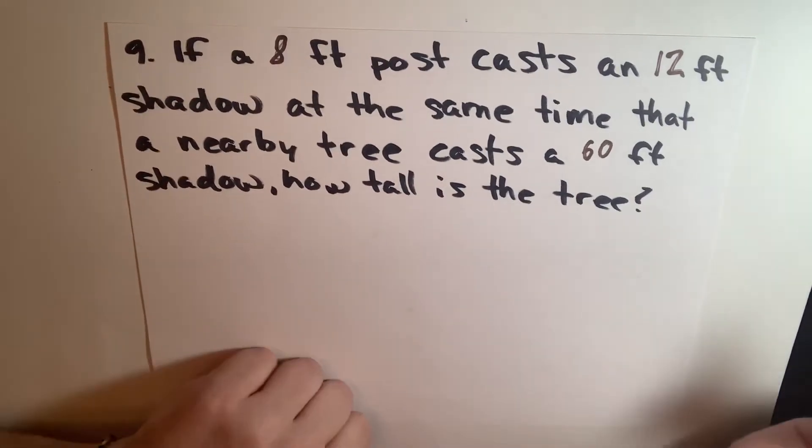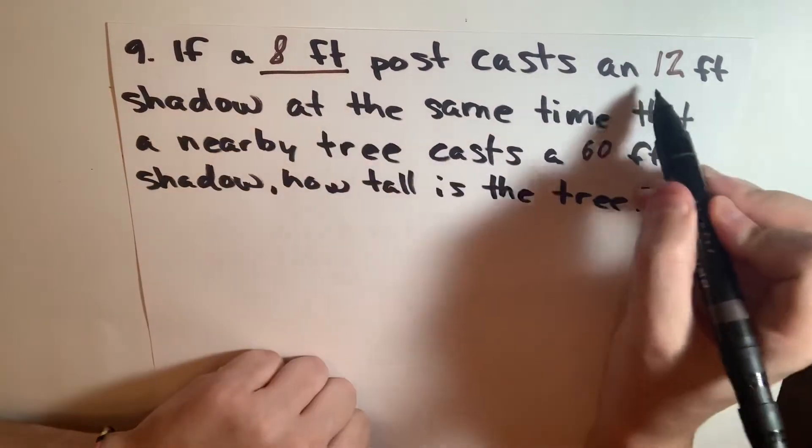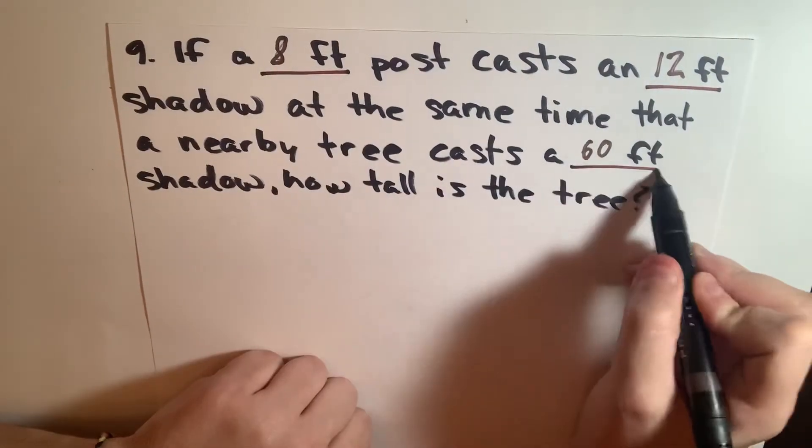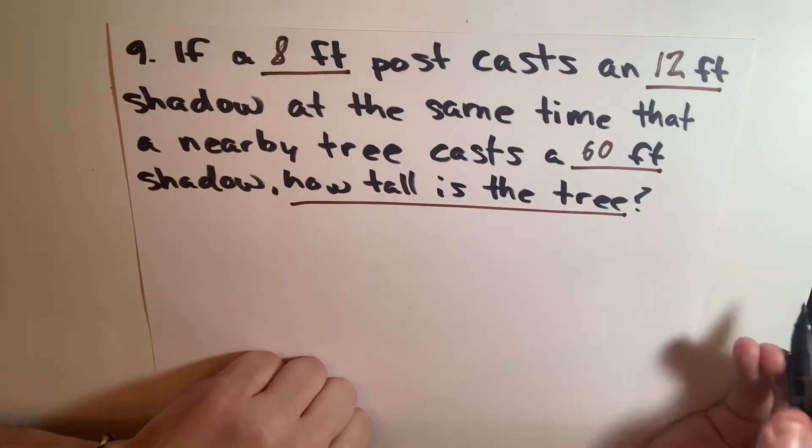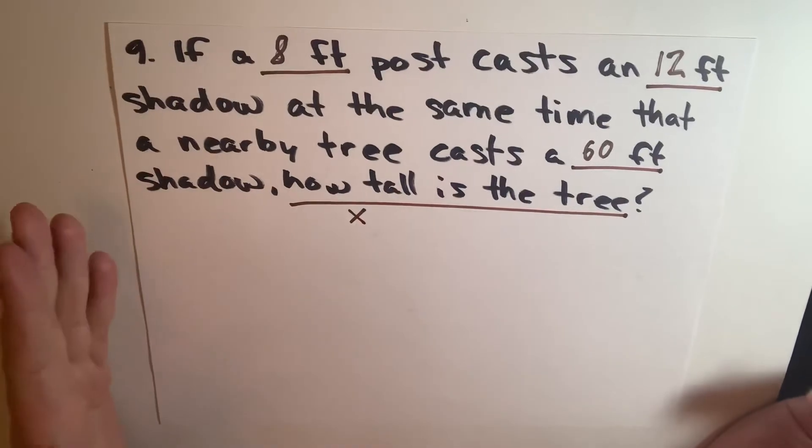This one seems kind of confusing at first, but we're going to use the same method. We're going to underline all of our numbers, and then this question here. So for how tall, we can just call that x. To make life easier, we'll give it a variable name.